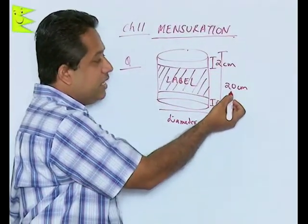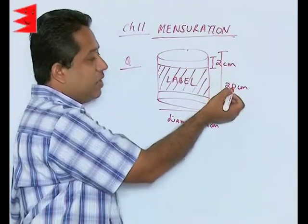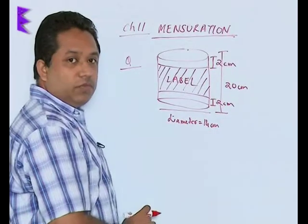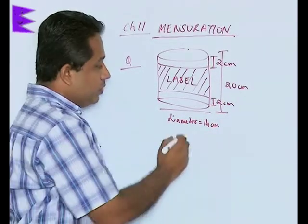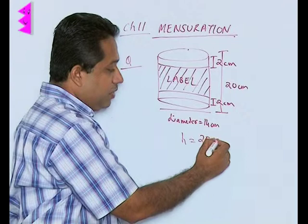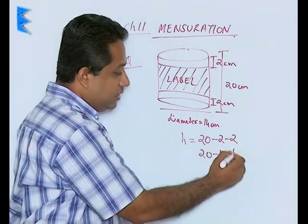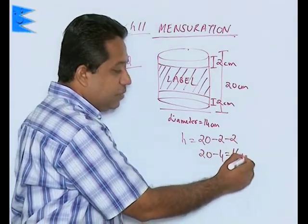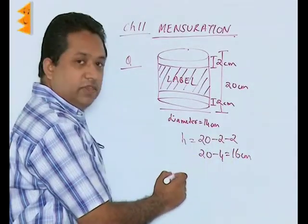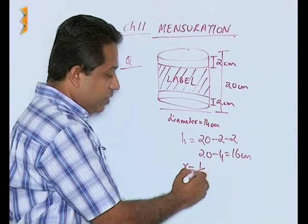To find the area of the label, we note the total cylinder height is 20, but the height of the label will be 20 minus 4, because we have to subtract 2 each from the top and bottom. So the height of the label will be 20 minus 2 minus 2, that is 16 centimeters.